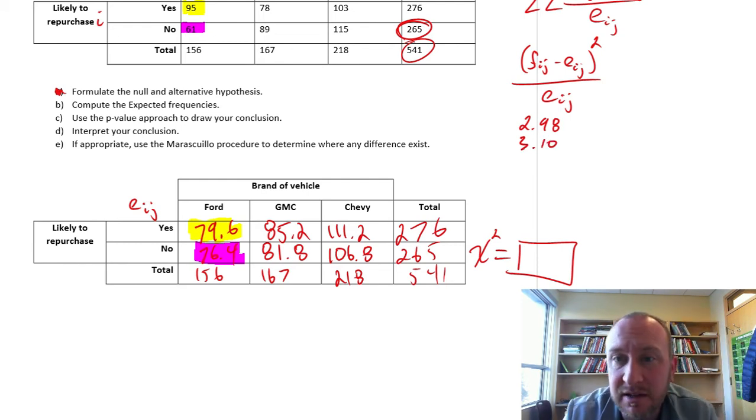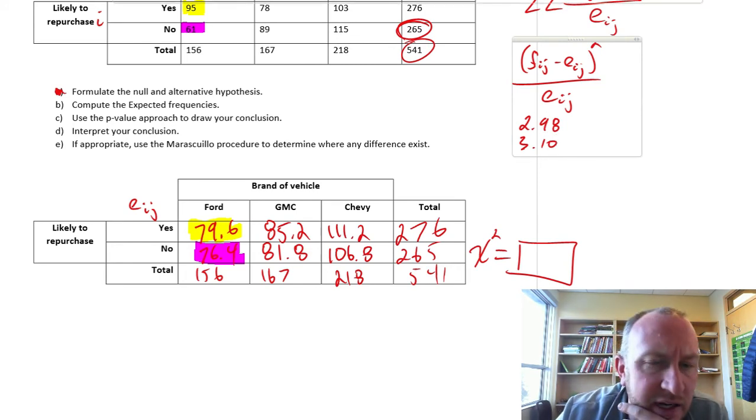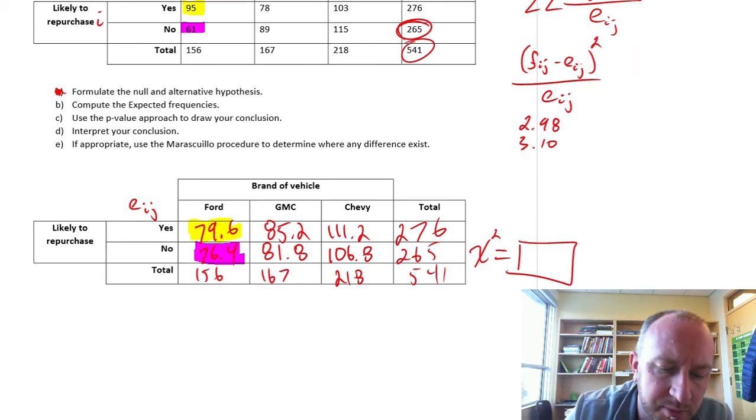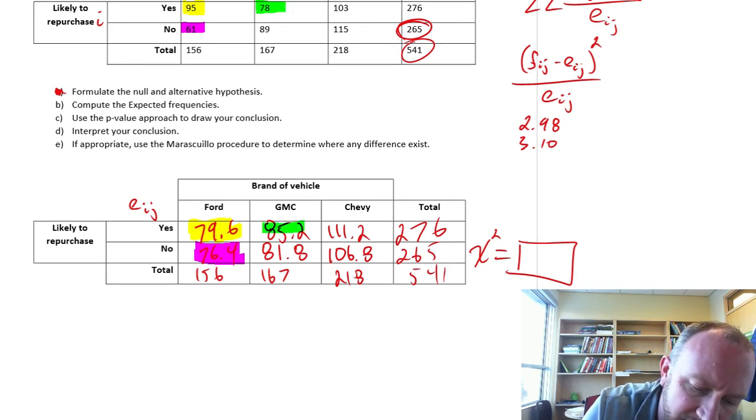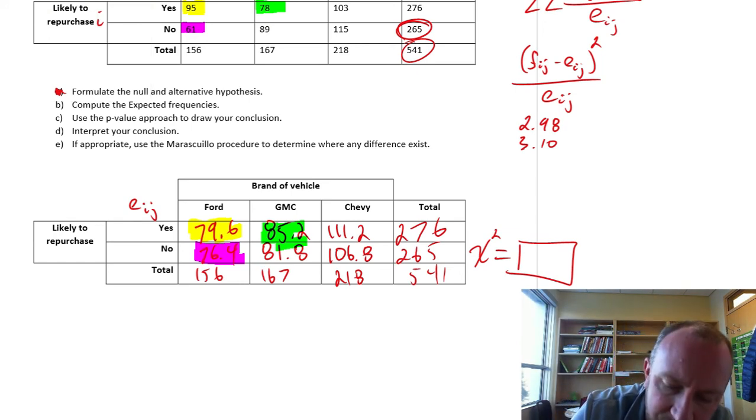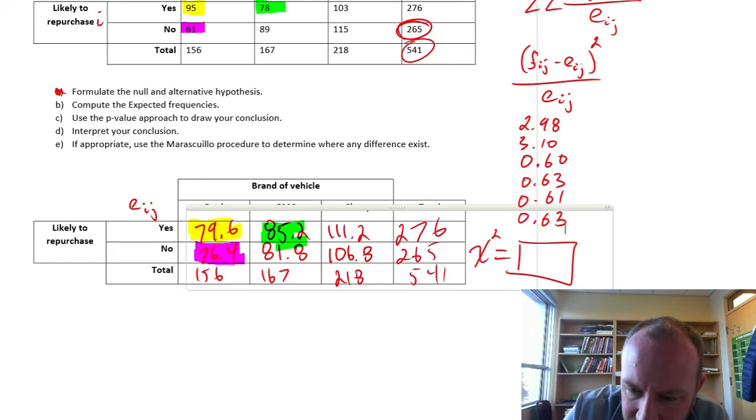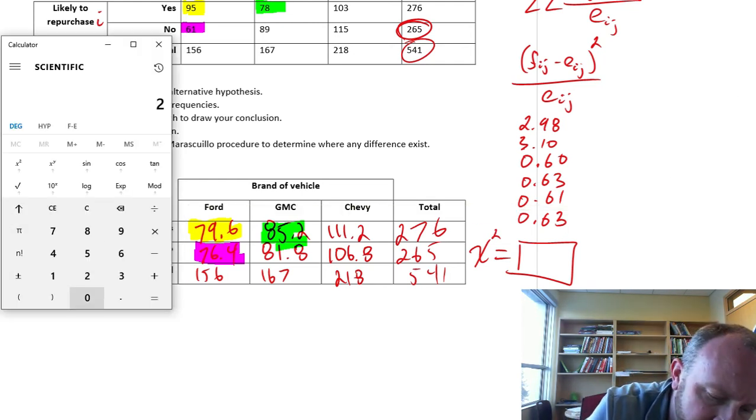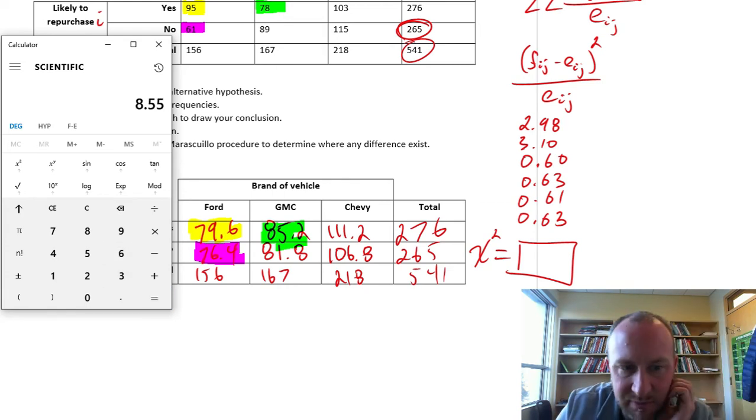And now if we do that same calculation for each of them, it's going to make this video a long one. I'll do the next ones a little bit more fast. So the next one will be the yes and the yes here. I've got the answers on the screen in front of me. So we have 2.9, 3.1, the next one would be 0.63, 0.61. Interesting that these are all coming up 0.6s. And when we add all of those together, we have 2.98 plus 3.1 plus 0.6 plus 0.63 plus 0.61 plus 0.63, and we have 8.55.